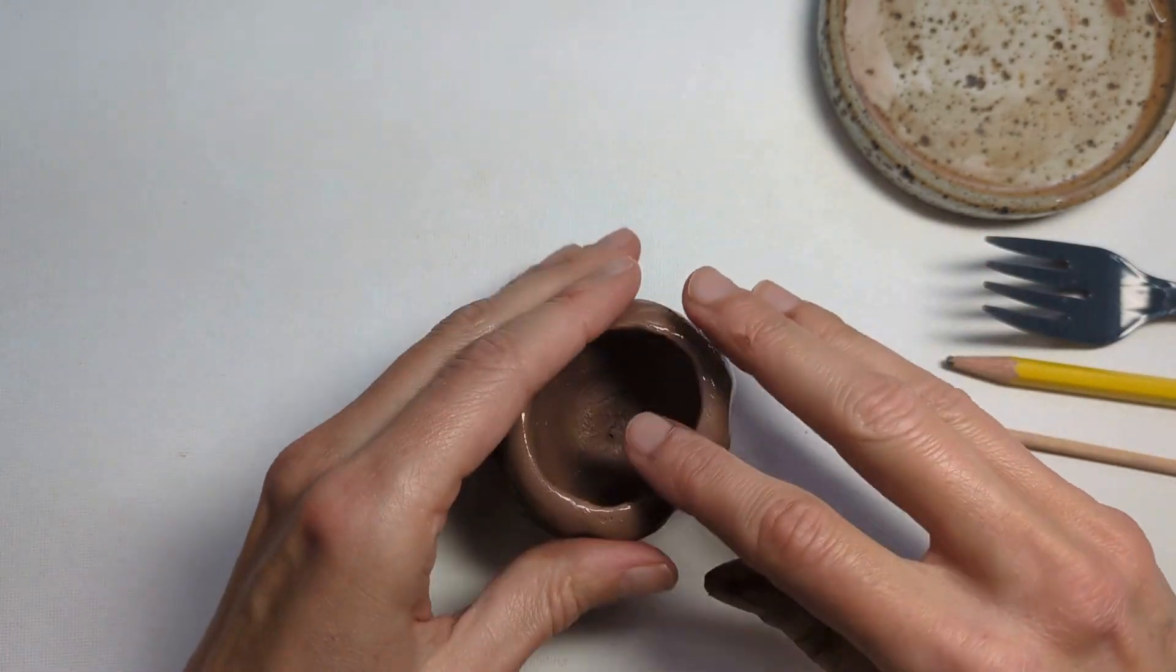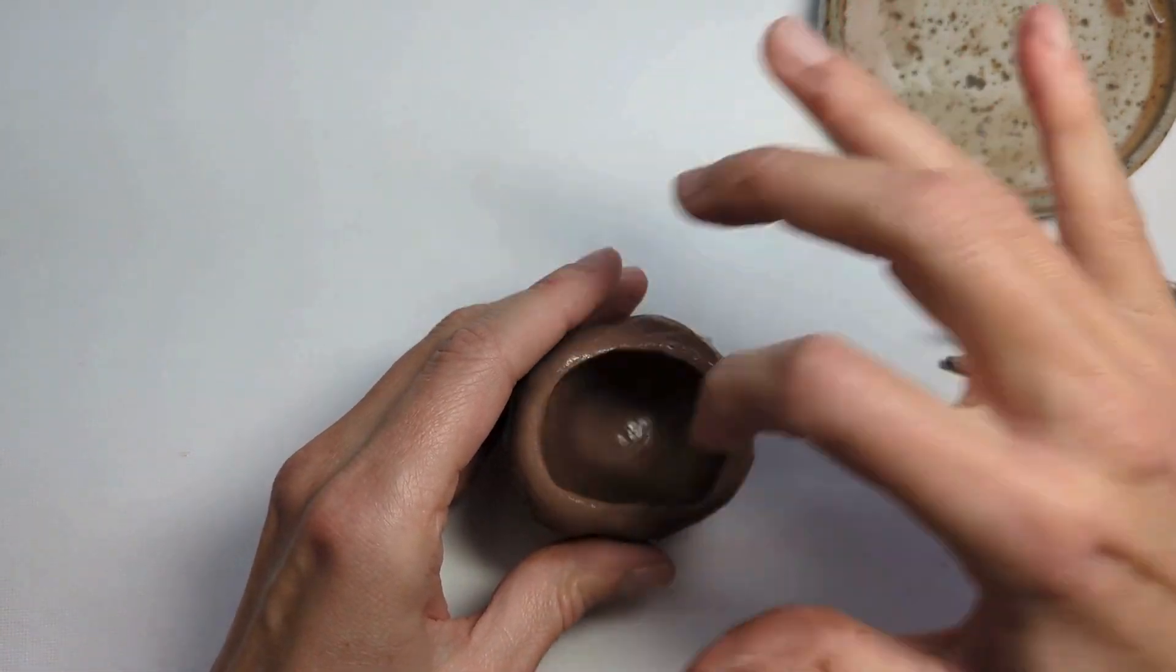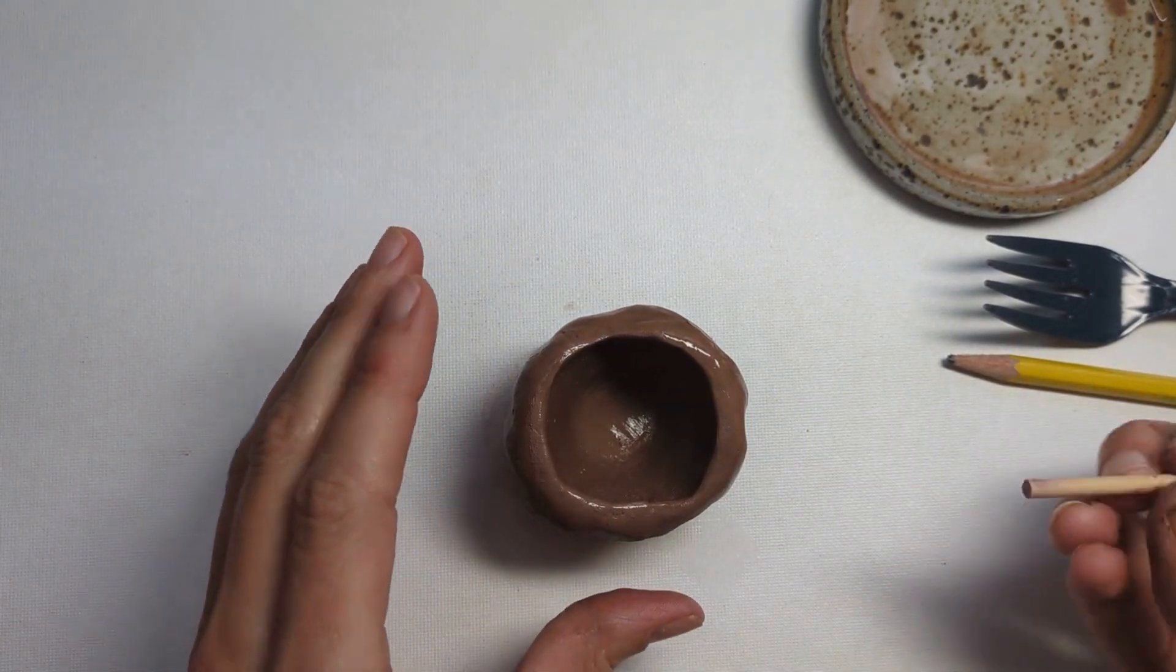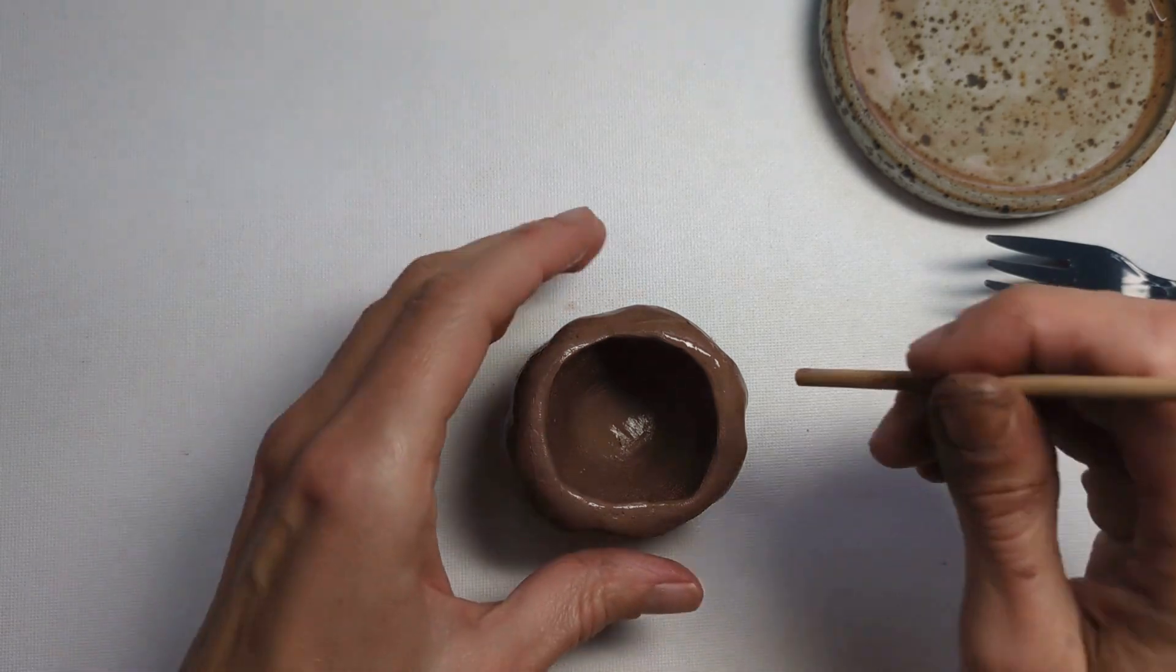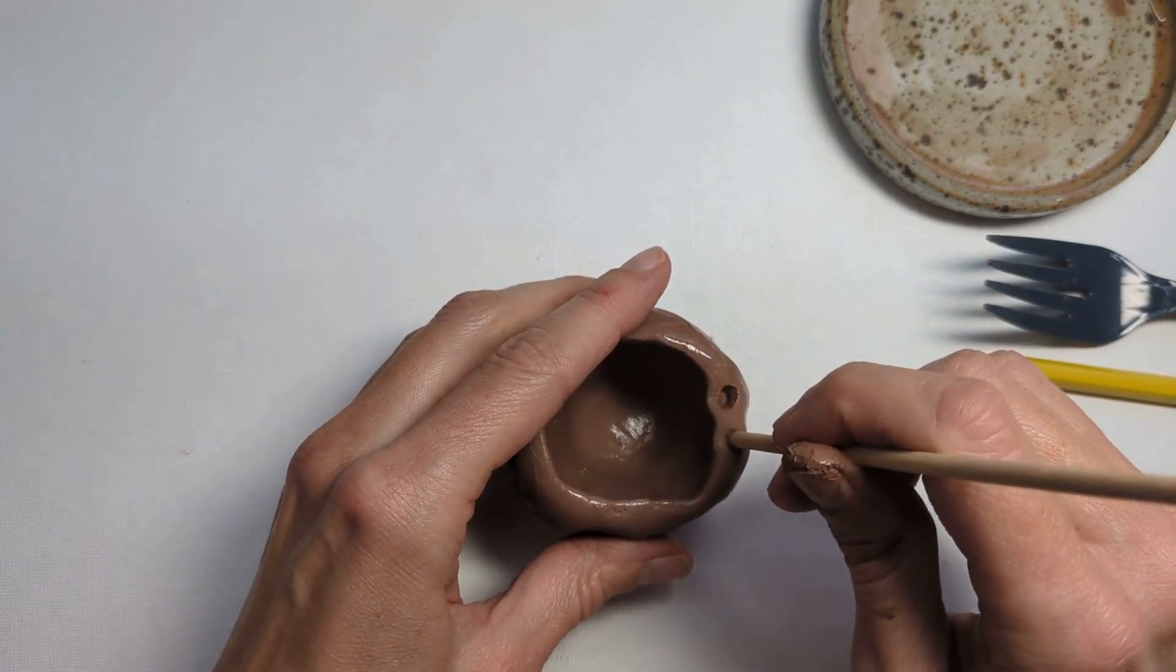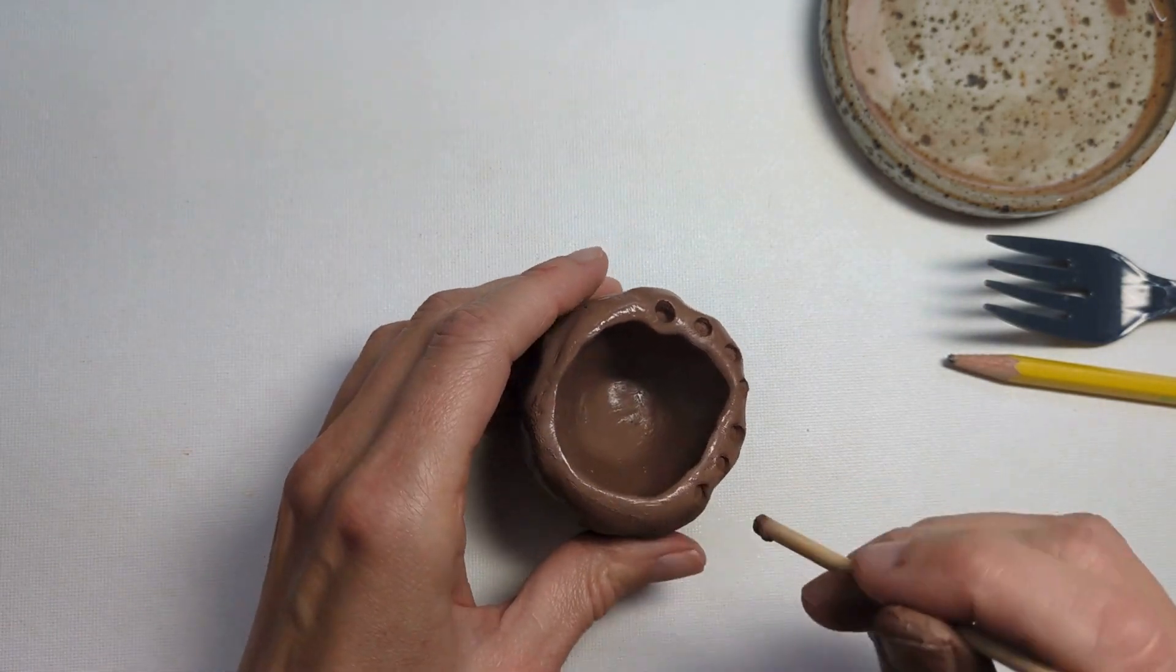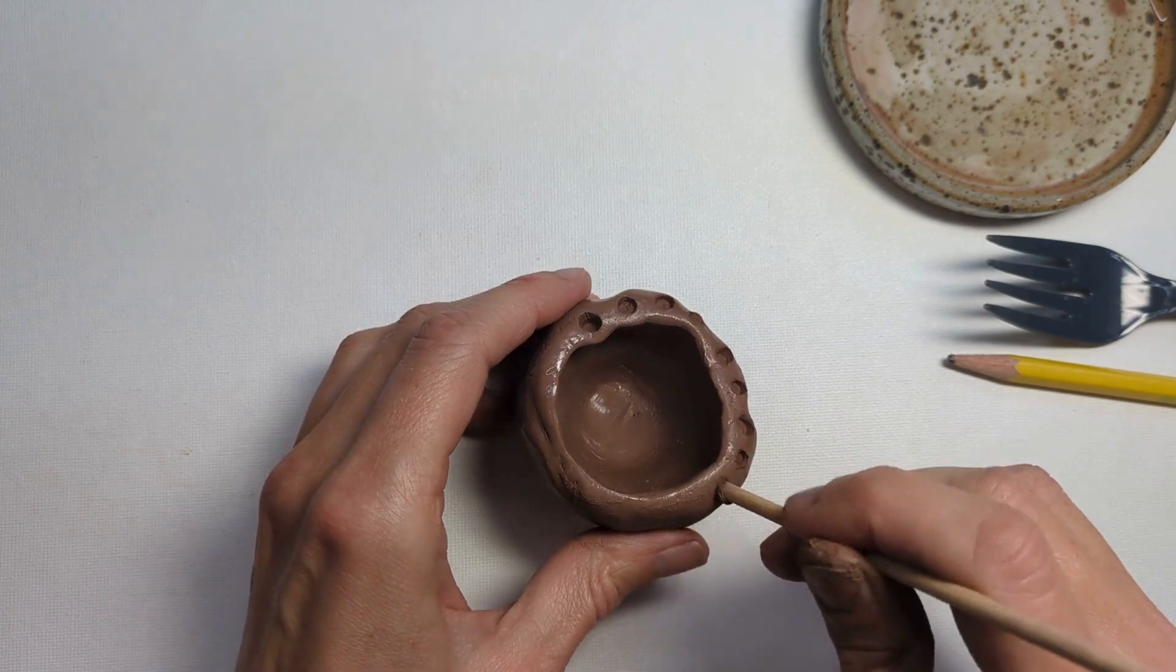I'm going to use some of these tools over here for decorating. I'm going to start off with the bamboo skewer and use the end of it to punch some little holes in the lip of the pot. Pots have body parts just like people. They have a lip, which is around here.